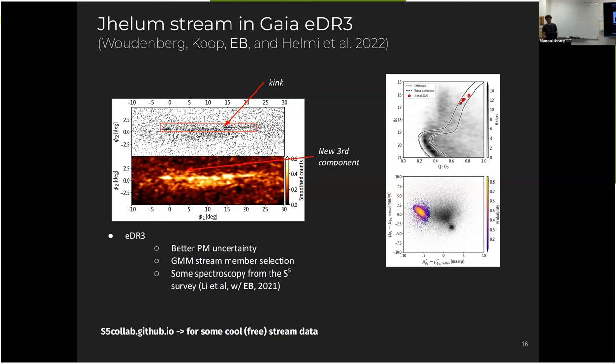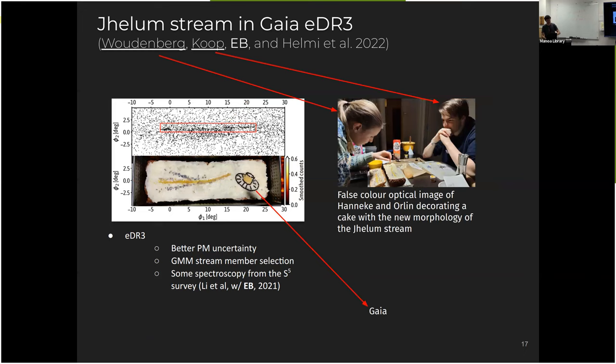And this is why Gaia is so good. You see that the stream really shows up as a clump here with these colored stars in proper motion that we can very easily select. Yeah, so these are the students. So they were very happy with the results and they made a cake decoration of the stream morphology. And if I blink between the two, you can see that the cake there is remarkably similar.